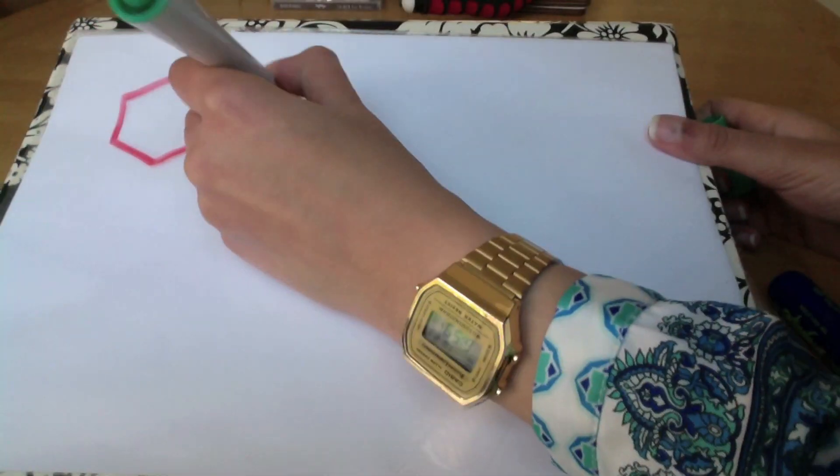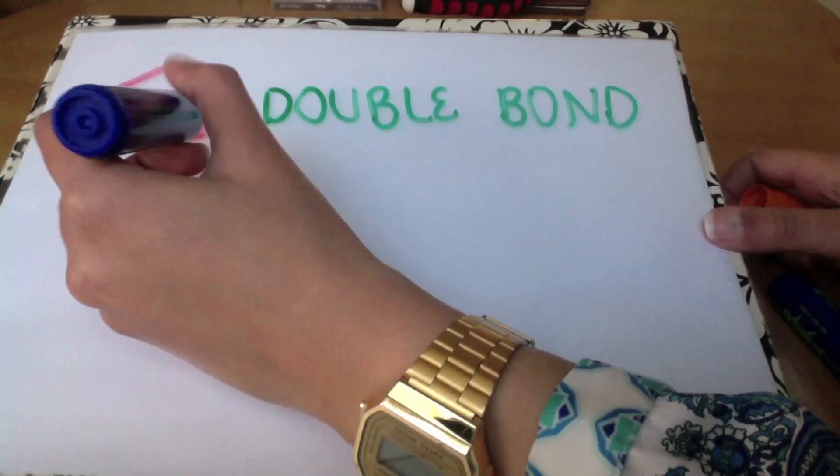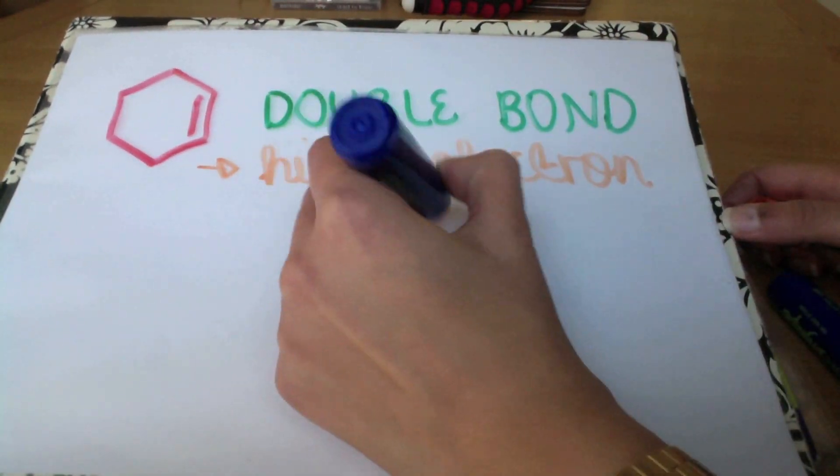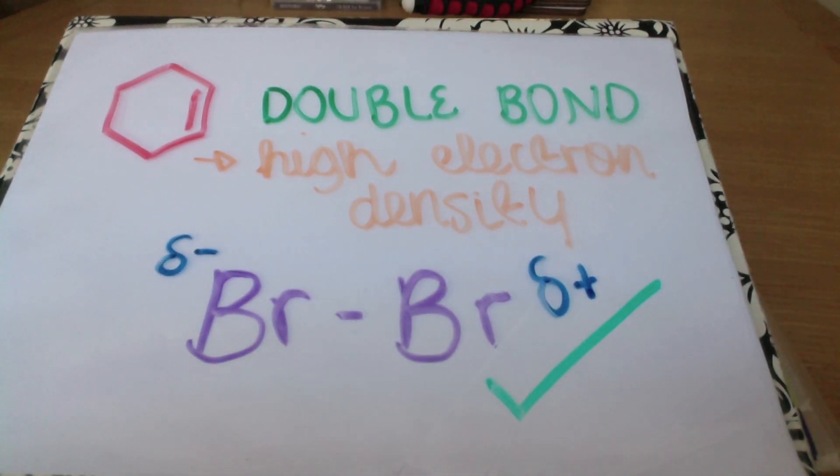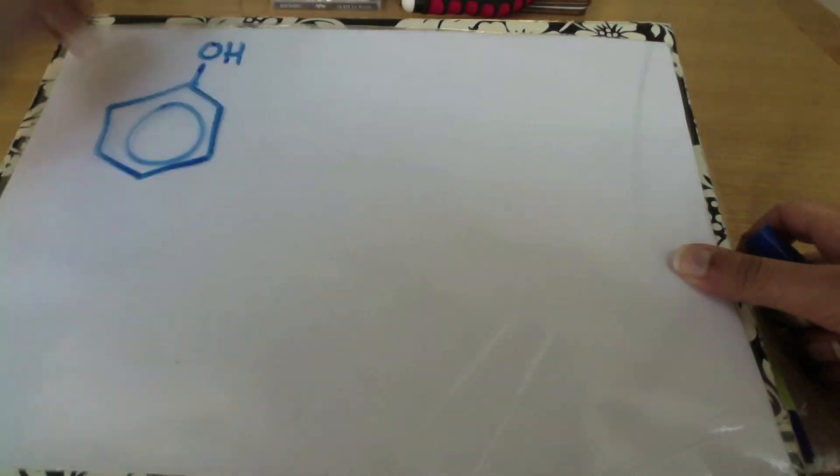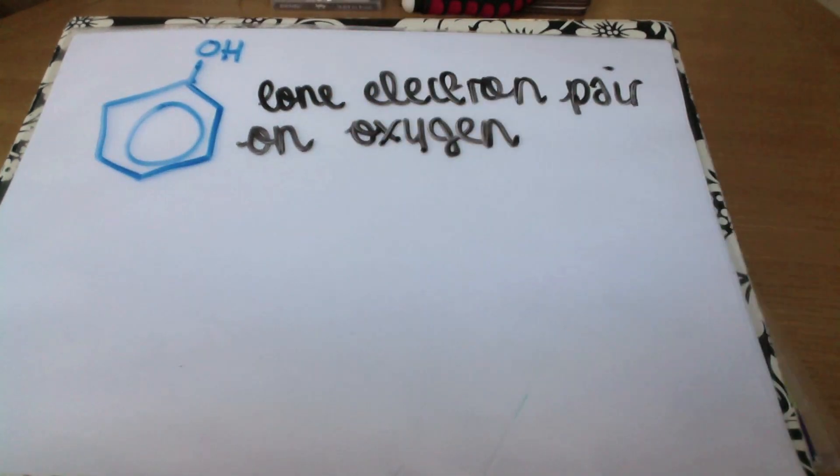Cyclohexene has a higher electron density because of the double bond where electrons are localized, and so it's able to induce a dipole in a bromine molecule. The hydroxyl group in phenol is electron donating, so a lone pair of electrons on the oxygen is delocalized towards the ring.